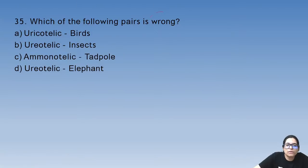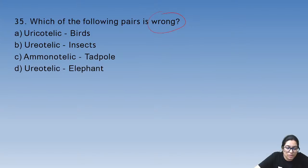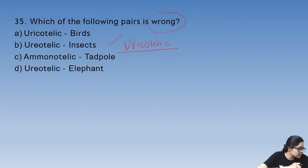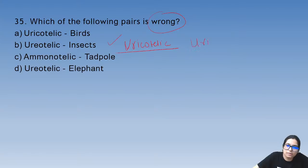Question 35: which of the following pair is wrong? Insects are not ureotelic — insects are uricotelic. They release uric acid.